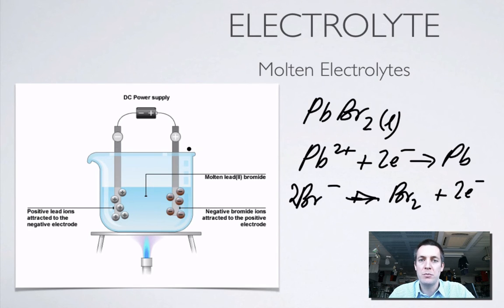So it's very easy to predict what will happen in the electrolysis of a molten substance because there are only ever going to be 2 ions in there, a positive one and a negative one.